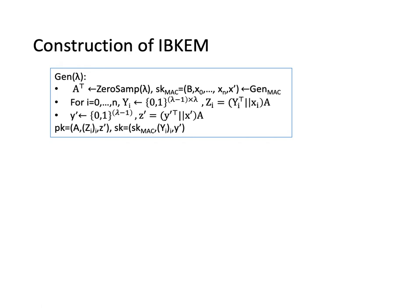We now give the construction of our IBE. The key generation algorithm samples the transposition of a matrix A from 0-samp and the secret key of our affine MAC. Then, it commits to the vectors xᵢ by computing yᵢᵀxᵢ times A. It also commits to the random bit x' in the secret key in the same way. The public key consists of A and the commitments. The secret key consists of a secret key of the underlying MAC and the randomness yᵢ and y' used to commit to the values.